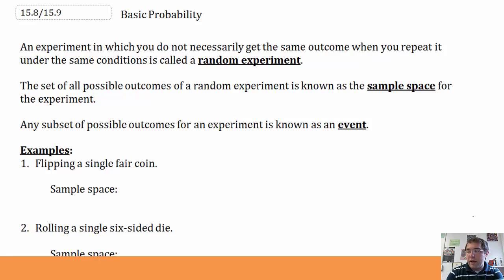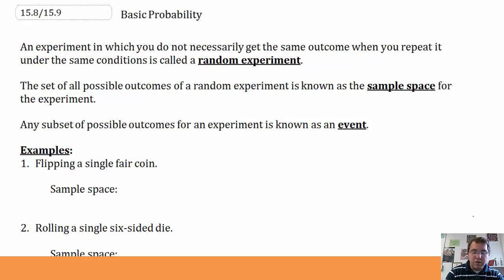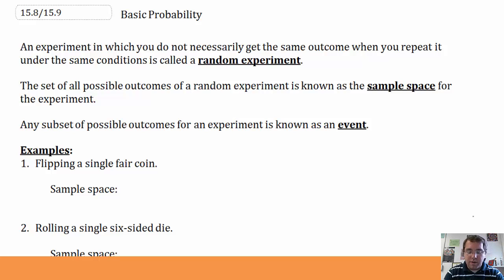This is sections 15.8 and 15.9 of Honors Algebra II, Basic Probability. First, with vocabulary. An experiment in which you do not necessarily get the same outcome when you repeat it under the same conditions is called a random experiment.